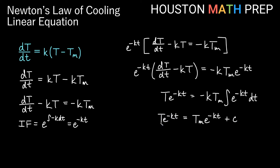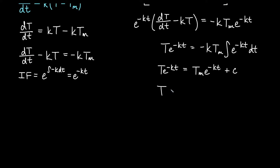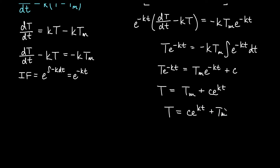Now to solve for our dependent variable capital T, we simply divide by e to the negative kt. So we get T_m — that e to the negative kt cancels — and dividing by e to the negative kt gives us C times e to the positive kt. So we get T is equal to T_m plus C times e to the kt, or the way we usually see it: T equals C times e to the kt plus T_m, where T_m is the temperature we approach in an exponential fashion.